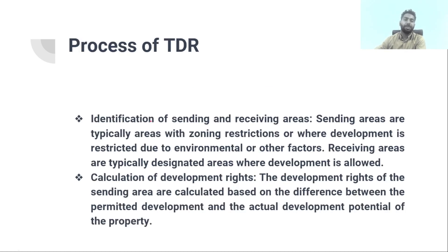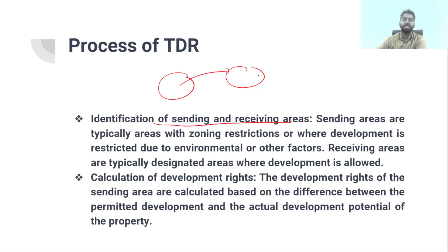The process begins with the identification of sending and receiving areas. You have to identify which area is sending rights and which area is receiving rights. Sending areas are typically areas with zoning restrictions where development is restricted due to environmental and other factors. Receiving areas are typically designated areas where development is allowed. We can transfer development rights from restricted areas to allowed areas.